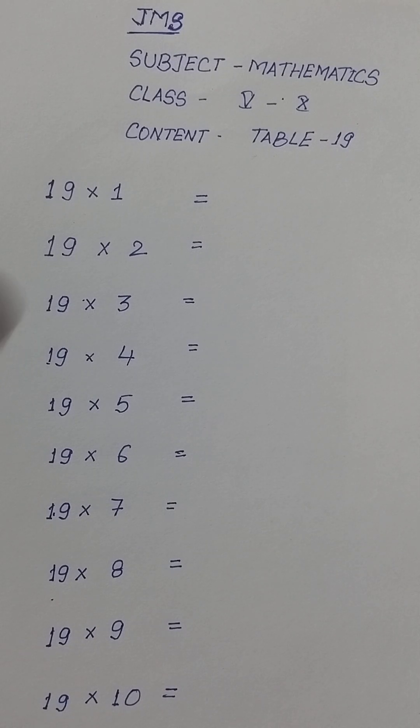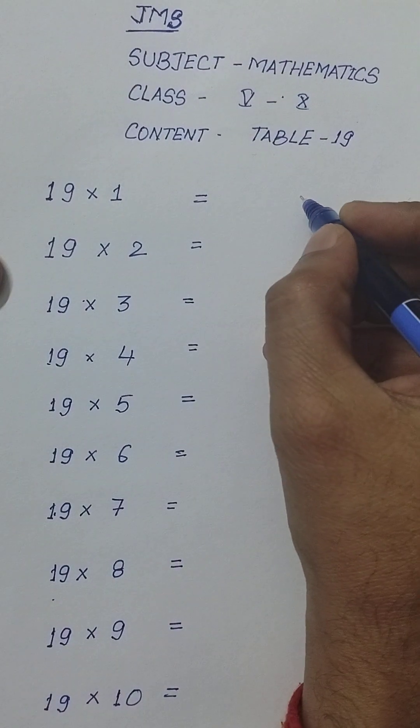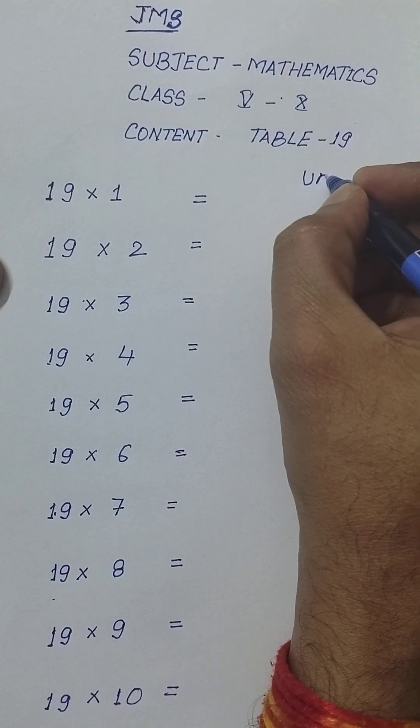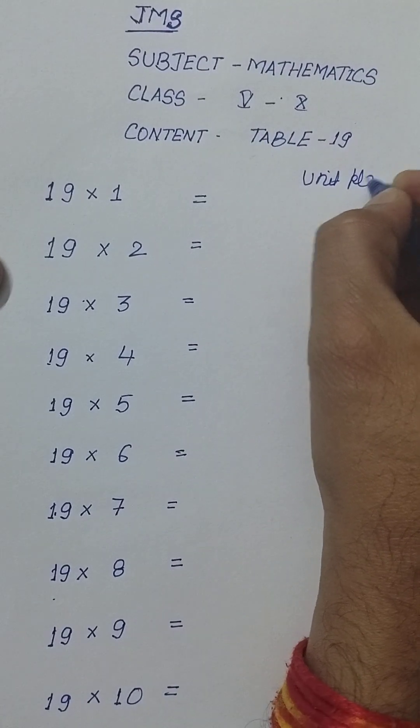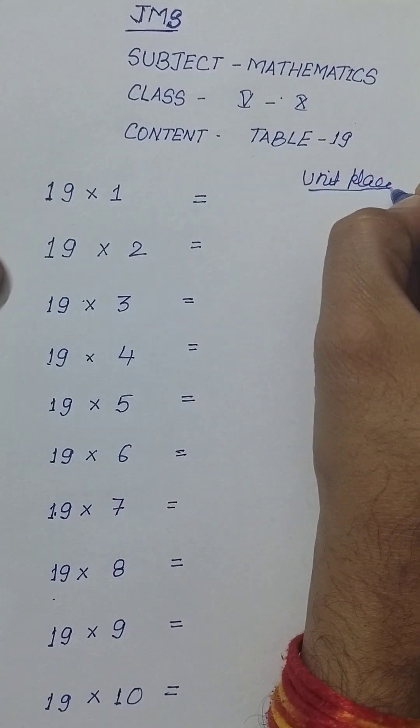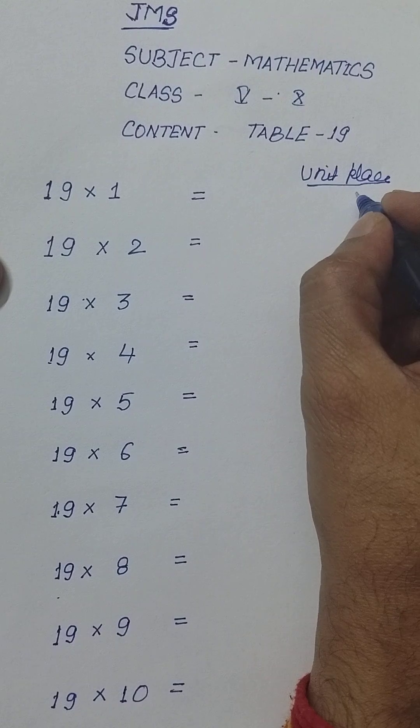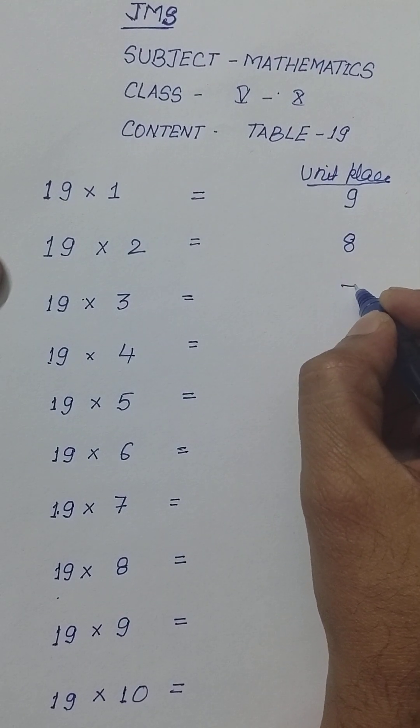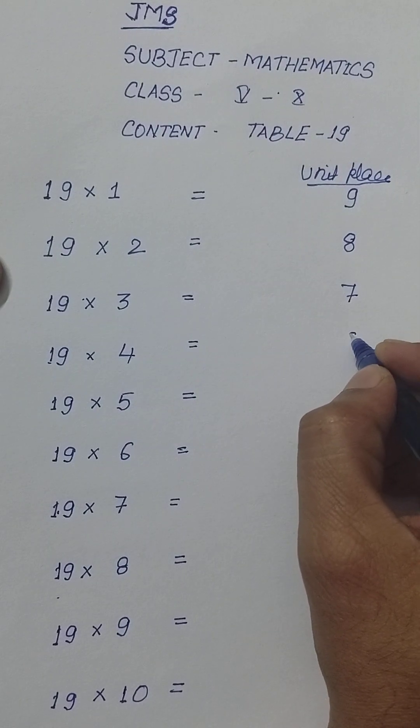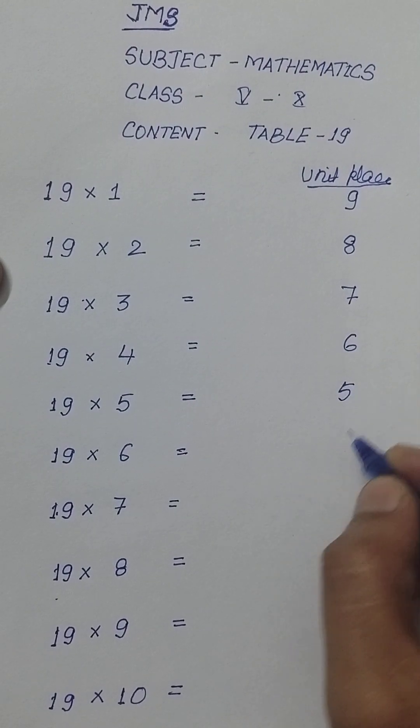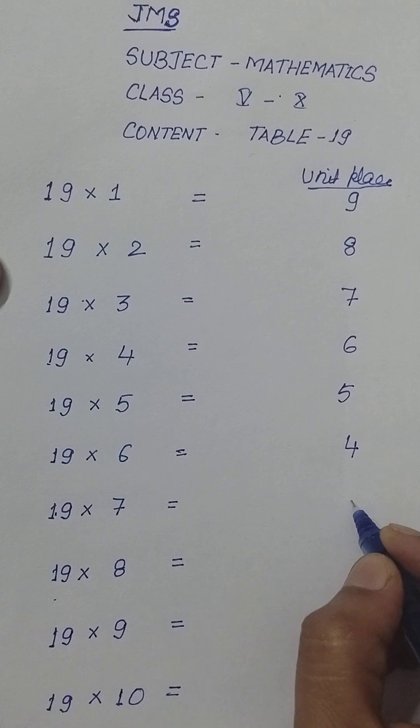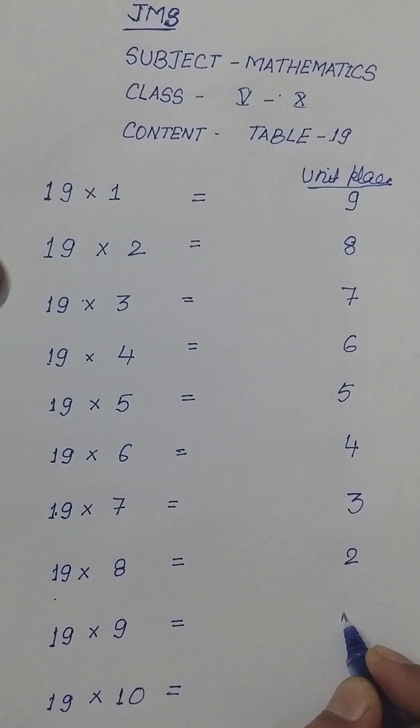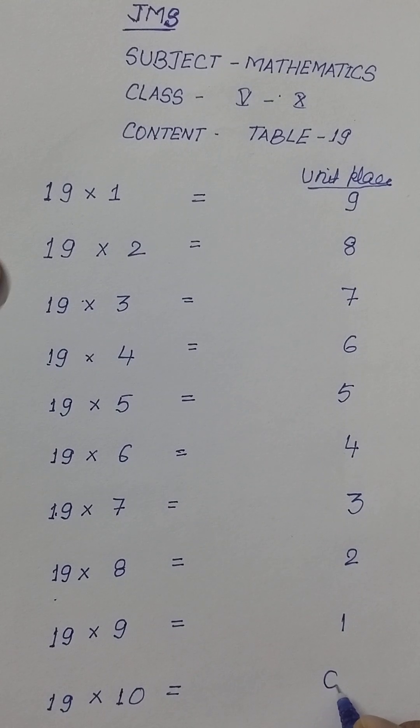So how to write the 19 table? What you are supposed to do at unit place, this is your unit place. So at unit place, you write starting from 9, 8, 7, 6, 5, 4, 3, 2, 1 and 0.